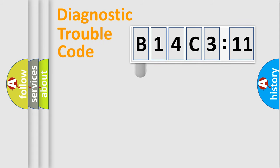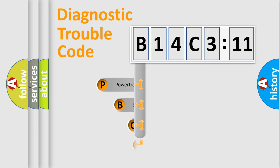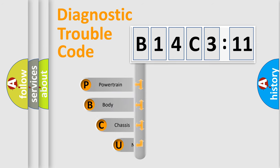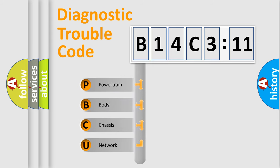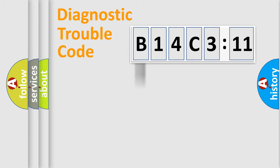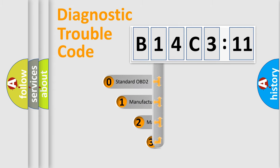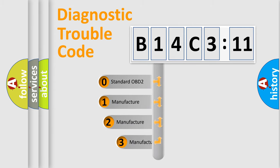First, let's look at the history of diagnostic fault code composition according to the OBD2 protocol, which is unified for all automakers since 2000. We divide the electric system of an automobile into four basic units: Powertrain, Body, Chassis, and Network. This distribution is defined in the first character of the code.